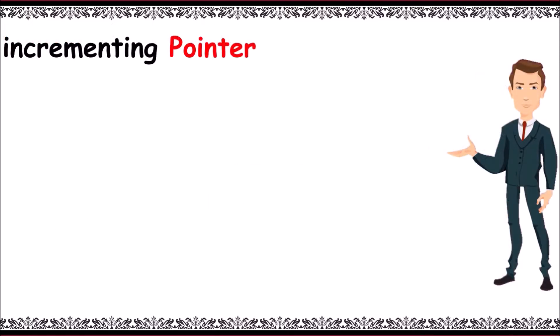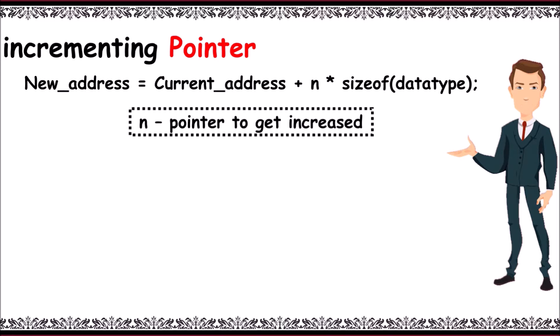Now incrementing pointer in C. If we increment a pointer, the pointer will start pointing to the immediate next location. The rule to increment the pointer is given as: new address equals current address plus n into size of datatype. Here n indicates the pointer address to get increased.